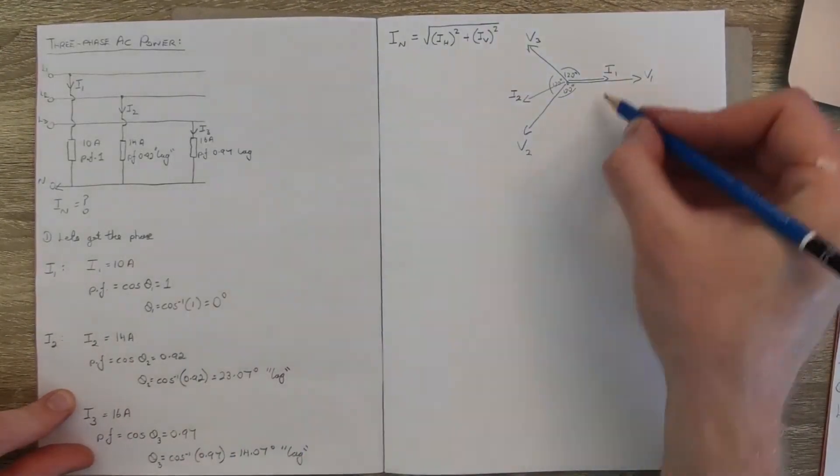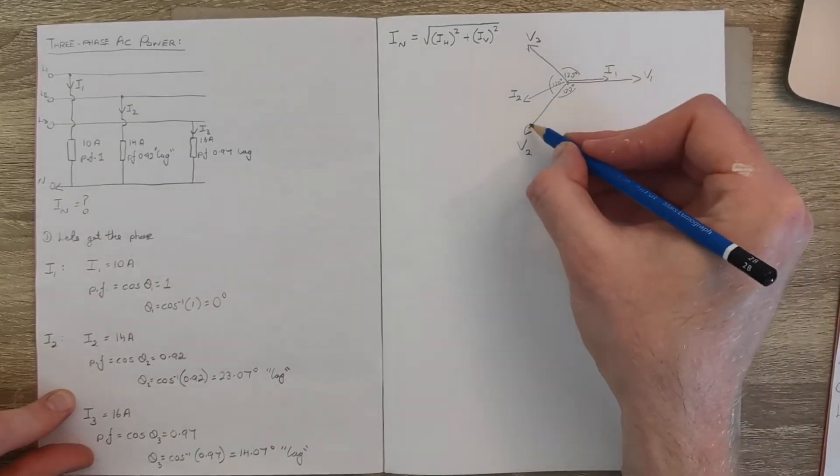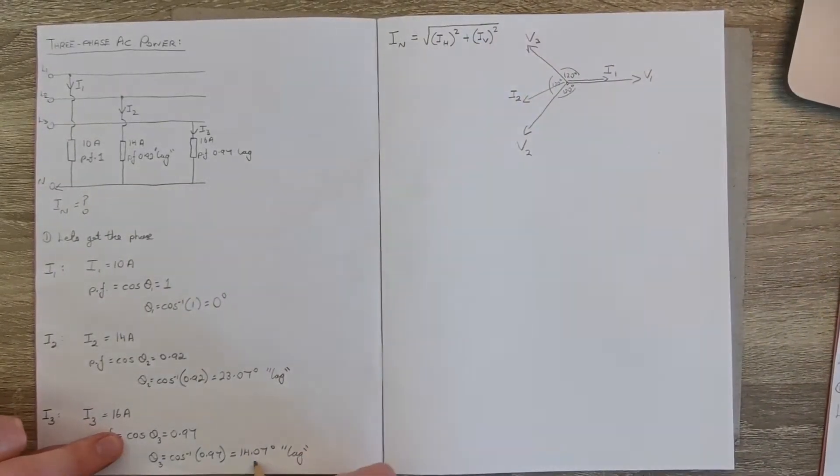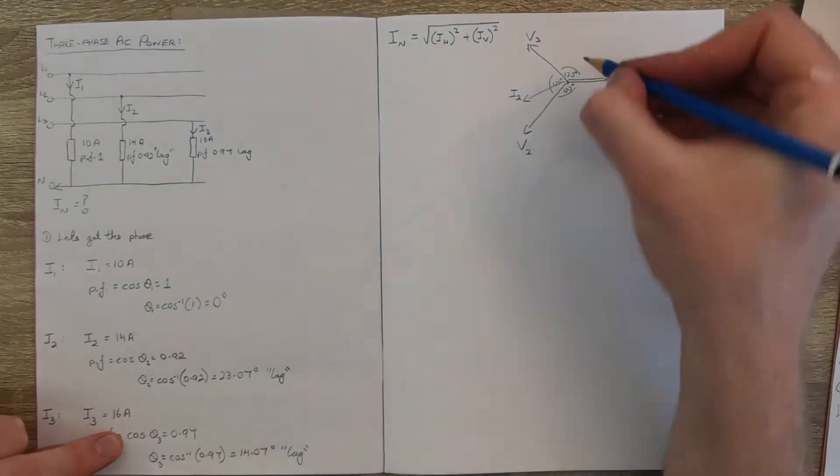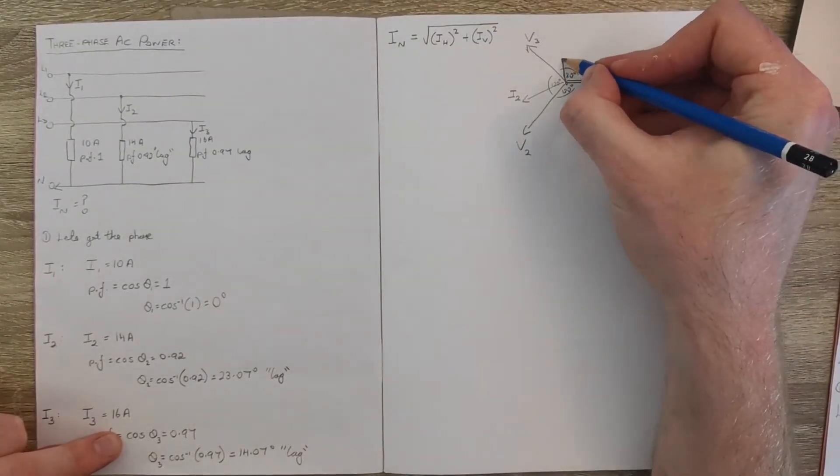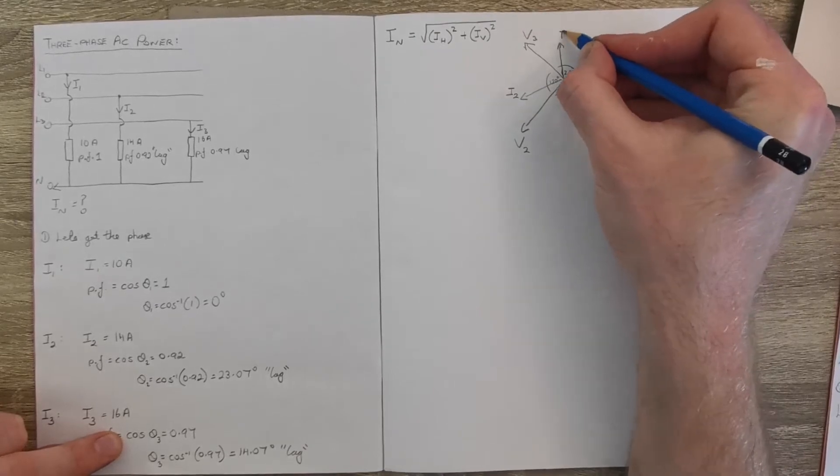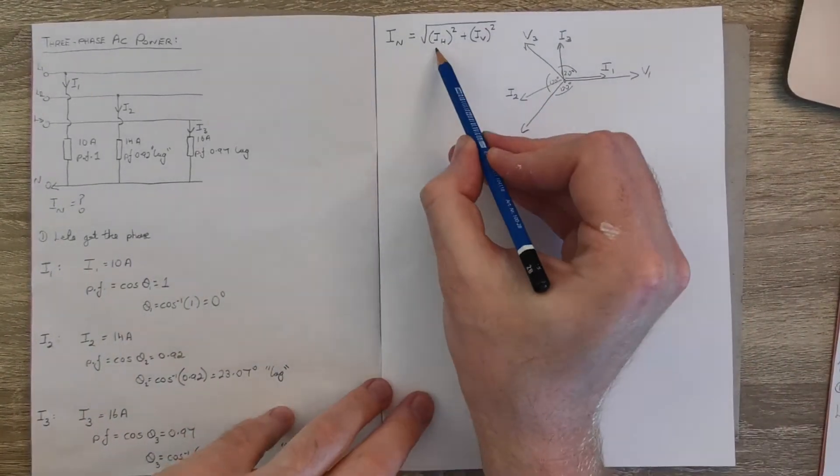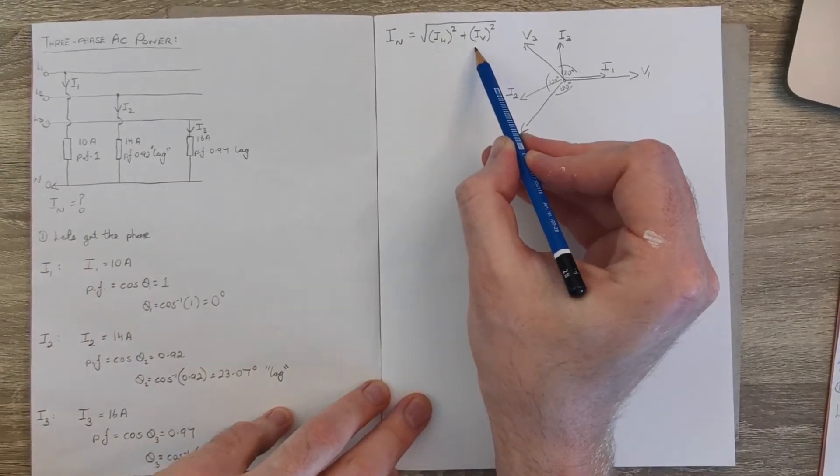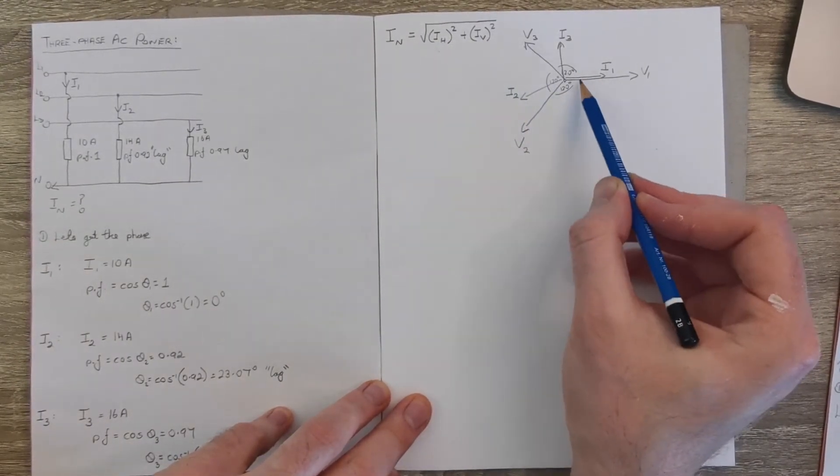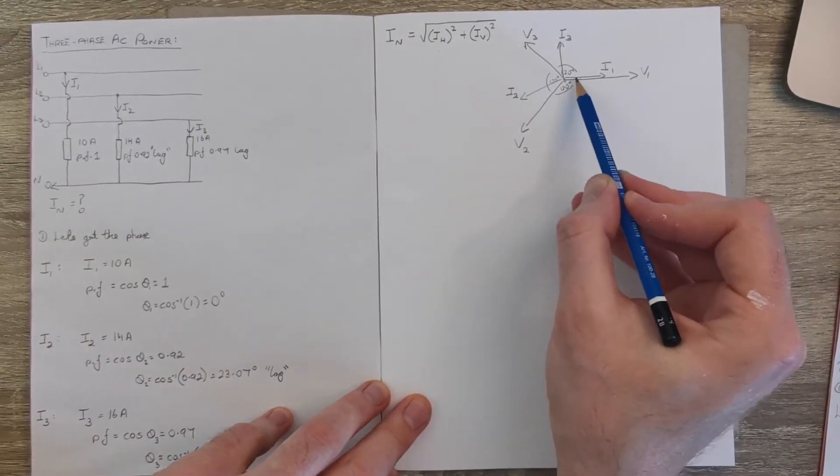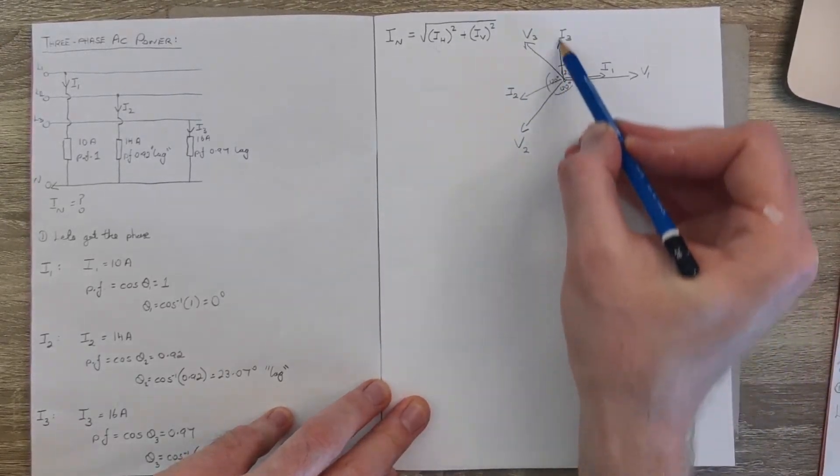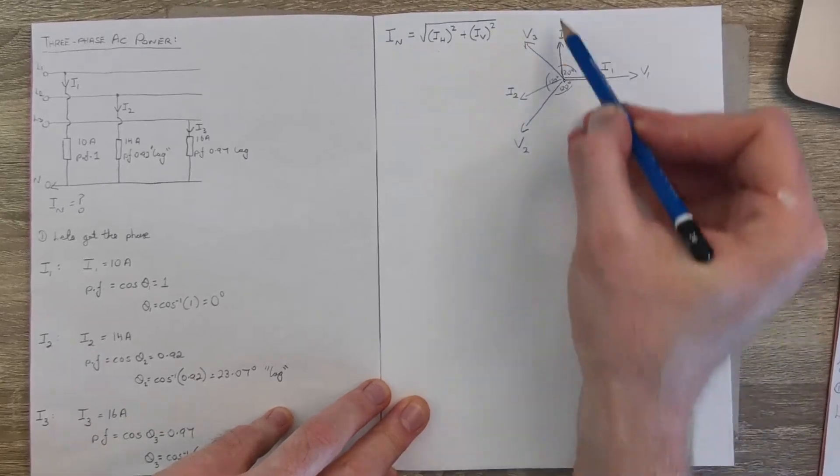And then i3 is going to be minus 120 minus 120 minus 14.07, so it's going to be somewhere up along here, that'll be i3. So when we work out the horizontal and vertical components of these individual currents, we're working out how much of the current is in this direction, that's the horizontal, and how much of it is in the vertical direction.